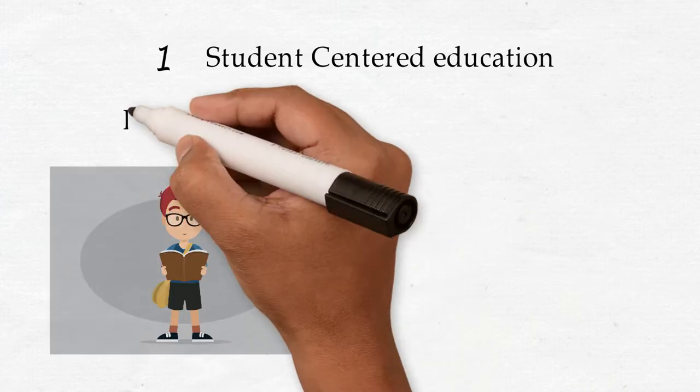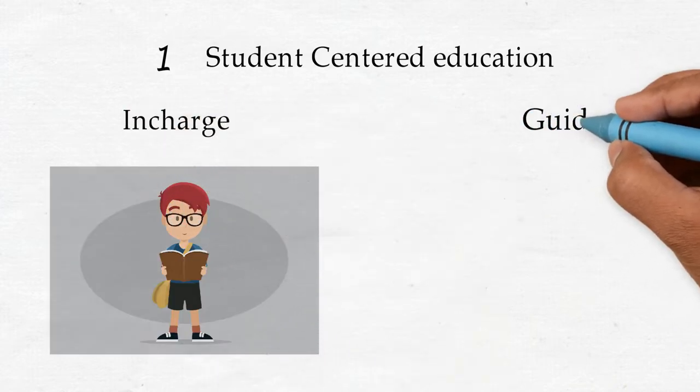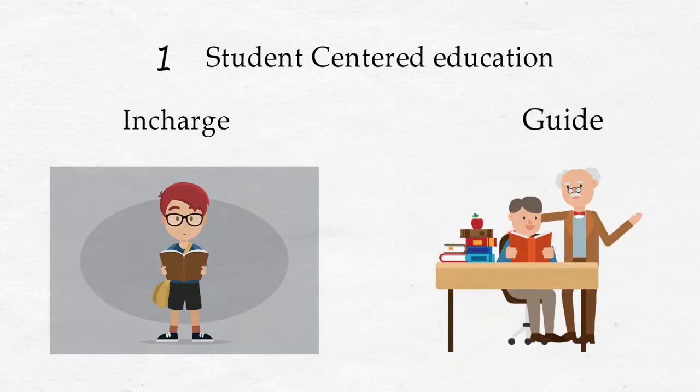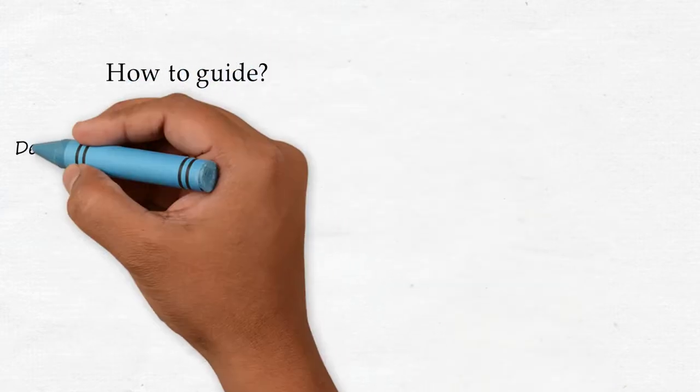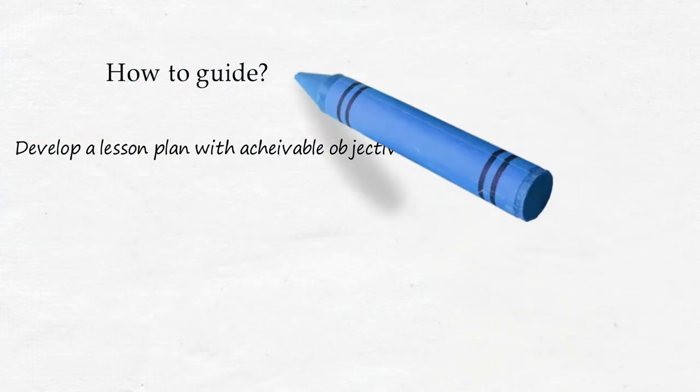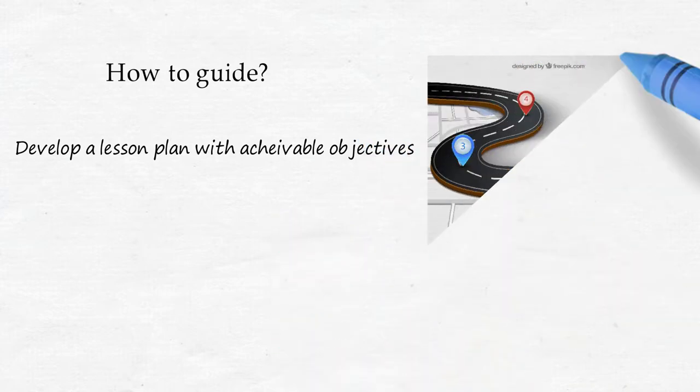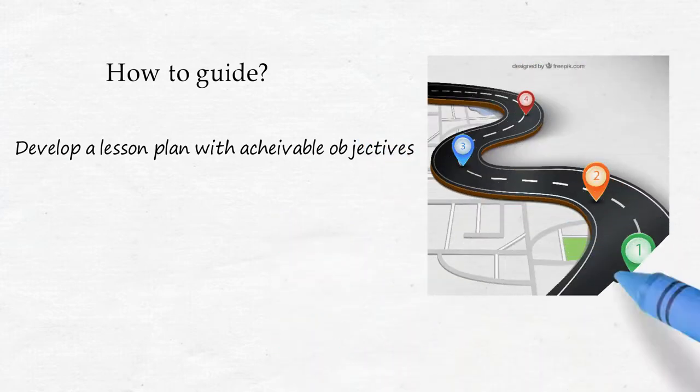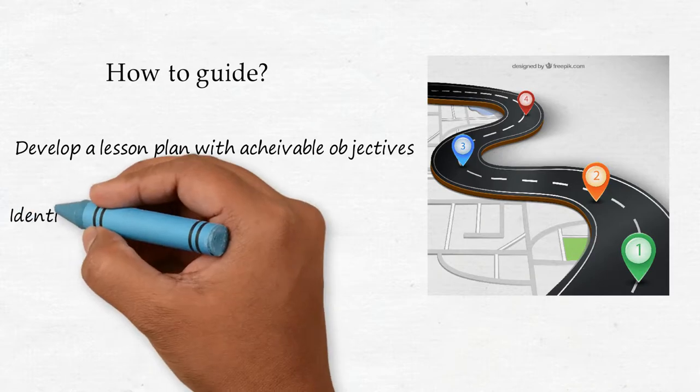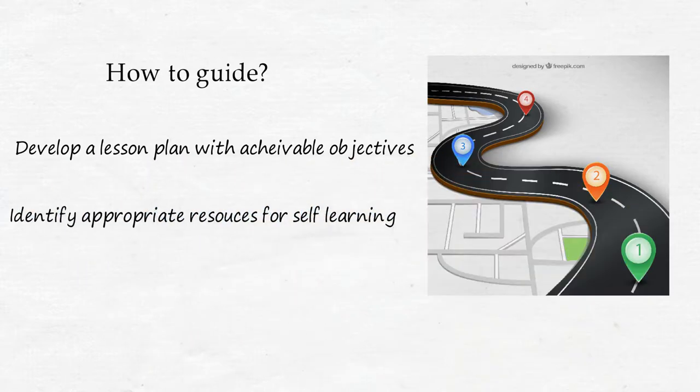What should a guide do? The guide should develop a clear lesson plan based on what students already know, where they should be after learning, and how they will achieve it. Teachers should identify appropriate learning resources that are easy for students to self-learn. If not available, teachers should create such resources and actively monitor students for progress.